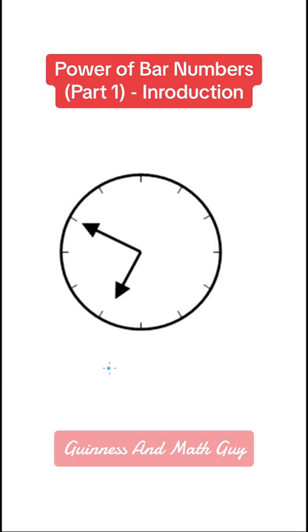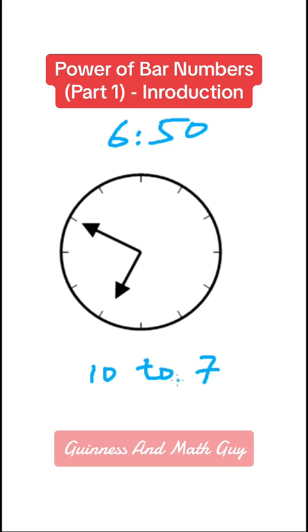We actually use this in our daily life. For example, the time 6:50 — sometimes we say '10 to 7'. Why? Because after 10 minutes it will be 7 o'clock. We can say both: 6:50 or '10 to 7', and 6:55 or '5 to 7', and so on.